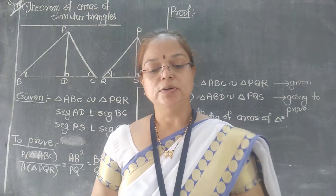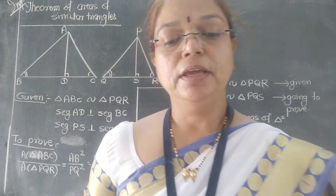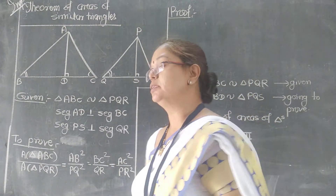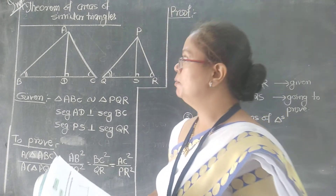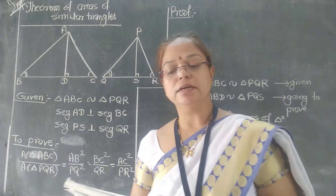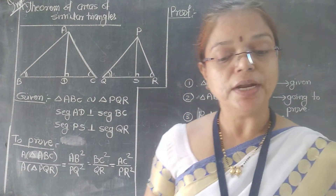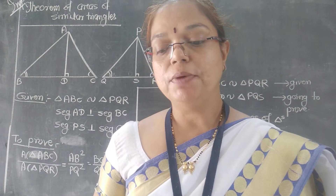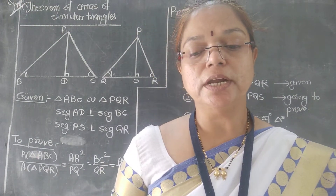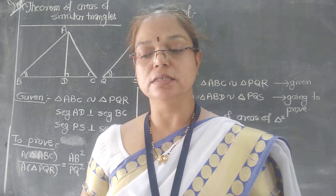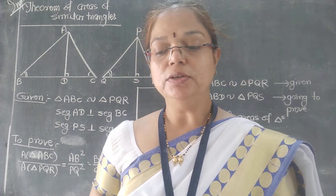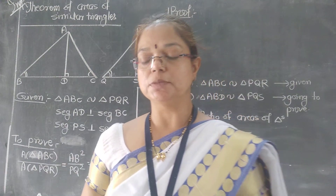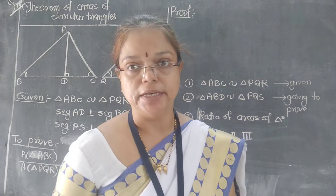Hello everyone. Let's start today's portion with the theorem of areas of similar triangles. When two triangles are similar, the ratio of areas of those triangles is equal to the ratio of the squares of their corresponding sides.